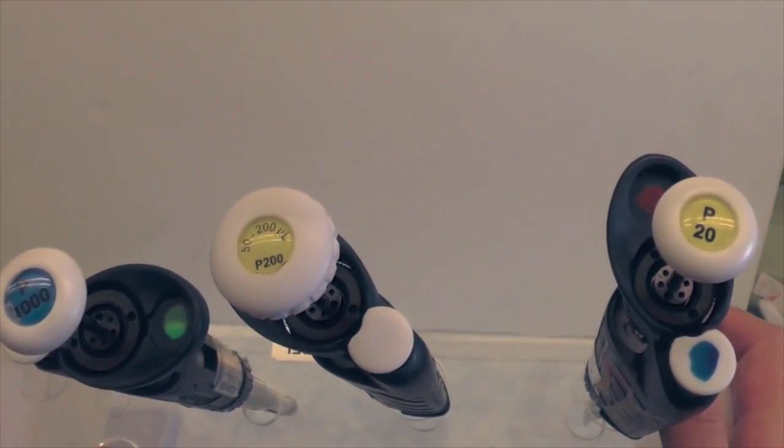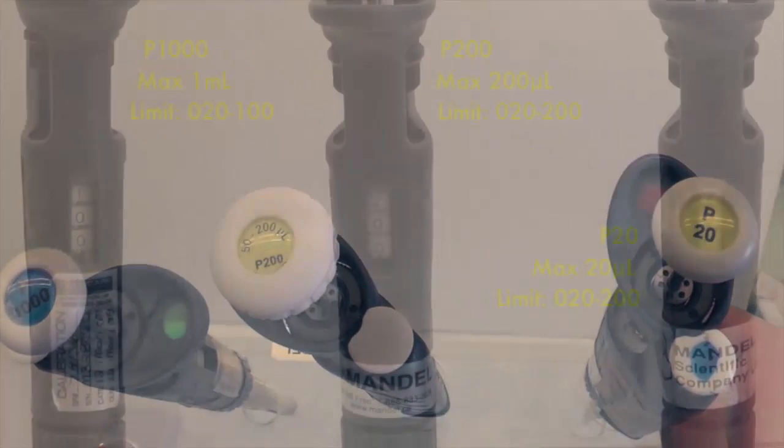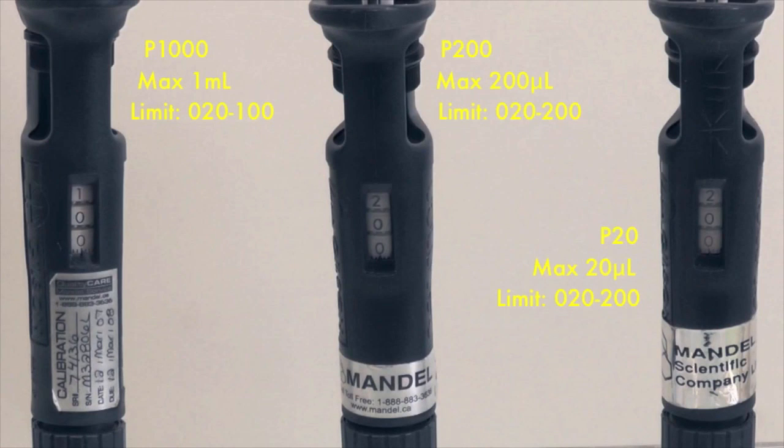The three types of pipetment we will introduce in this video are P1000, P200, and P20. The number denotes the maximum volume transferred by the pipetment in microliters.